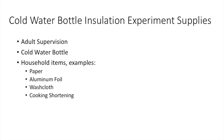Thank you, Santiago, for some great learning tips and a potential experiment. If you are interested in exploring insulation further with adult supervision, I challenge you to follow through with Santiago's experiment. Get adult permission, a cold water bottle, and some household items like paper, aluminum foil, maybe a towel, maybe even some cooking shortening, or anything else you can think of with adult permission. You can pause the video here for that or note it down as a rainy day activity.